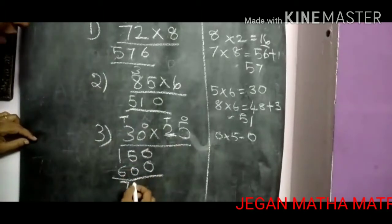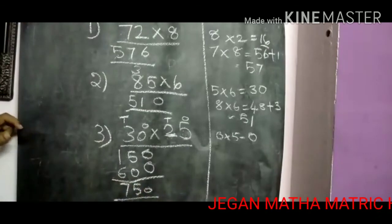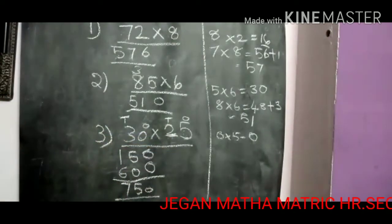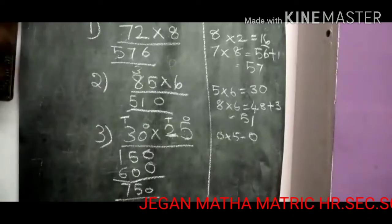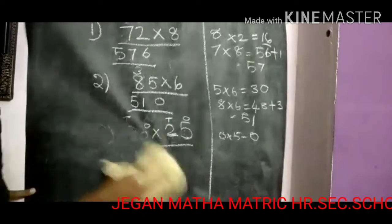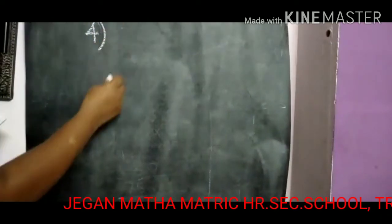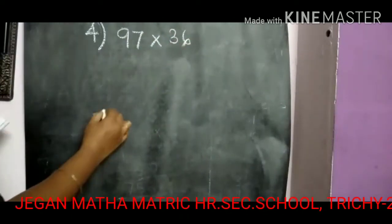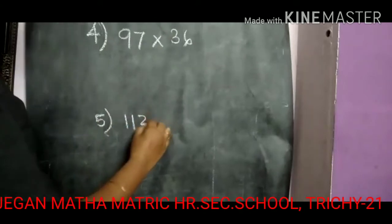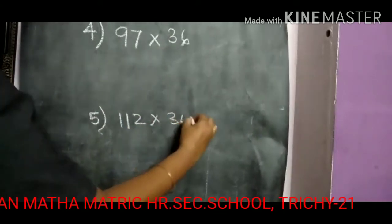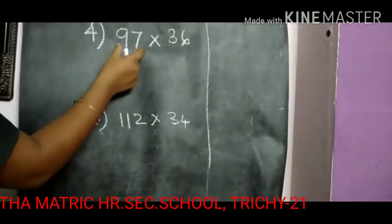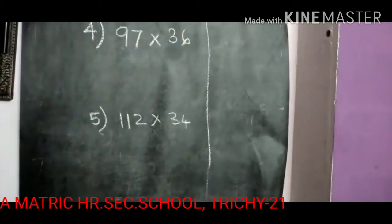So final answer 750. So 30 multiple with 25, answer 750. Ok children, I am going to see some more examples. Now: 97 multiple with 36, and 112 multiple with 34. First see 97 multiple with 36 — 2 digit number multiple with a 2 digit number.